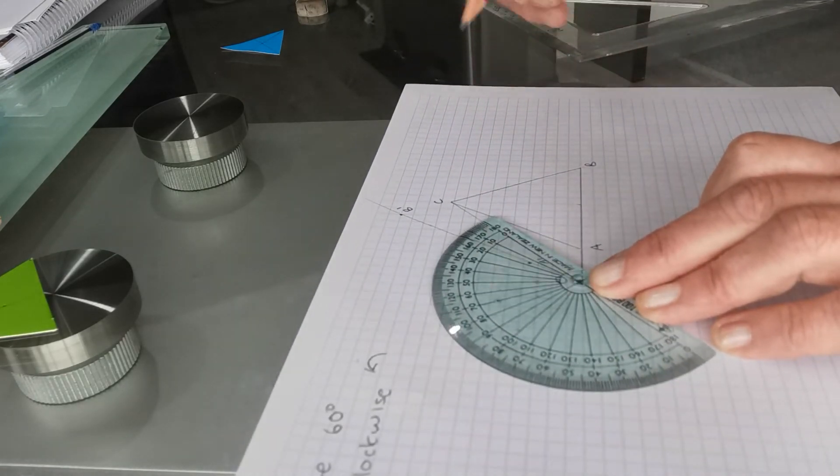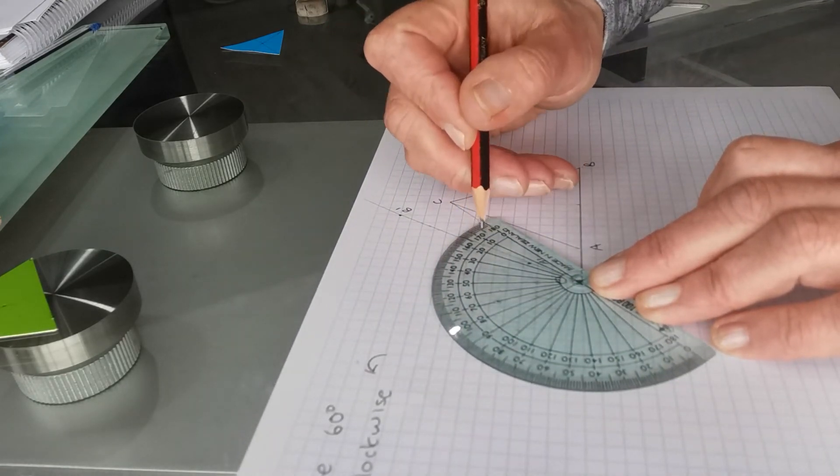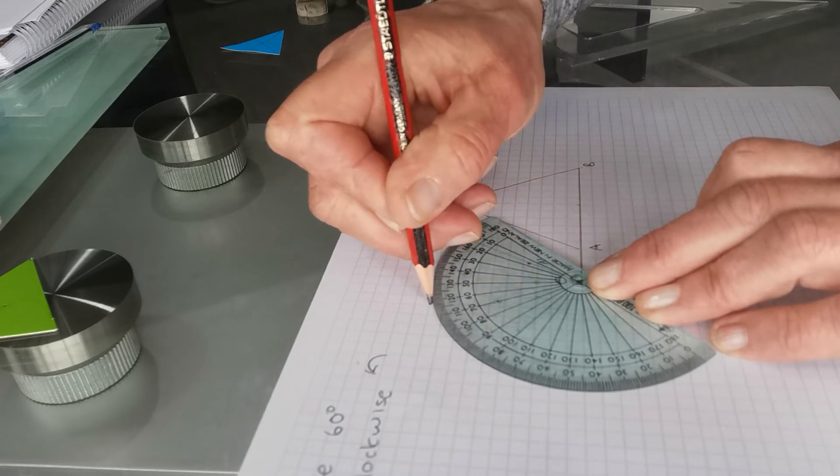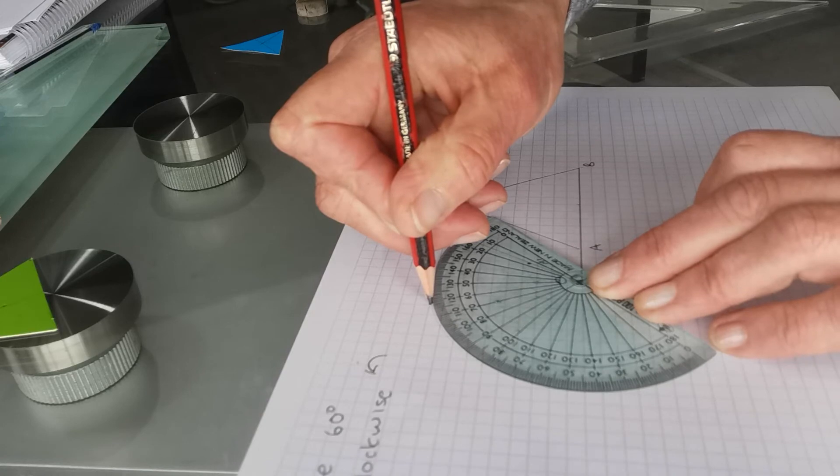Step off from 0, 10, 20, 30, 40, 50, 60 degrees. Put a dot outside the protractor.